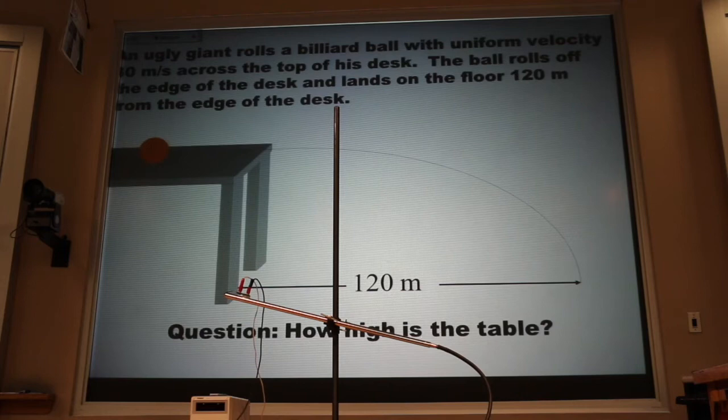In this problem, an ugly giant rolls a billiard ball with uniform velocity of 30 meters per second across the top of his desk. The ball rolls off the edge of the desk and lands on the floor 120 meters from the edge of the desk.